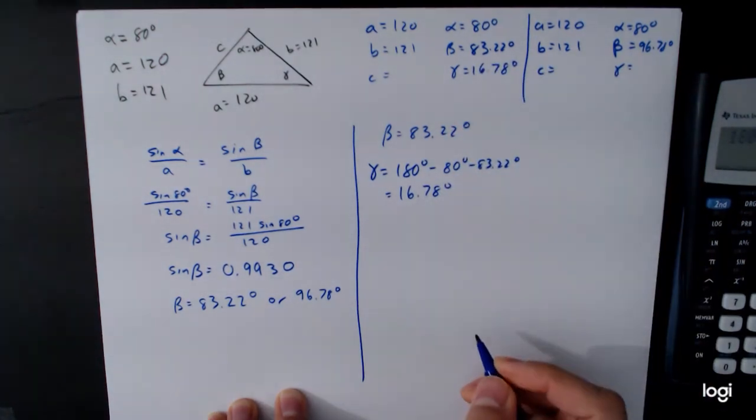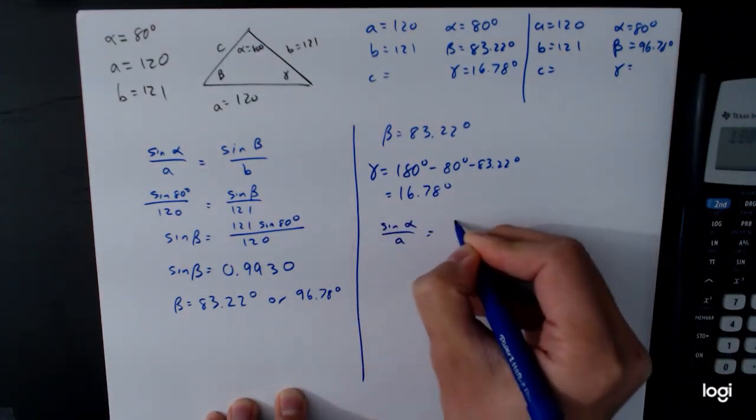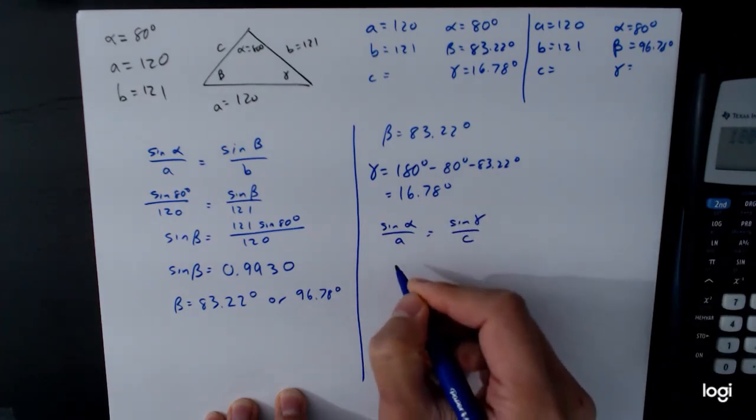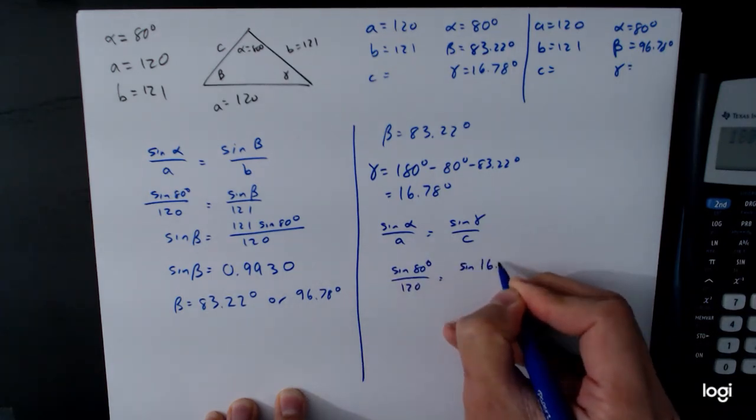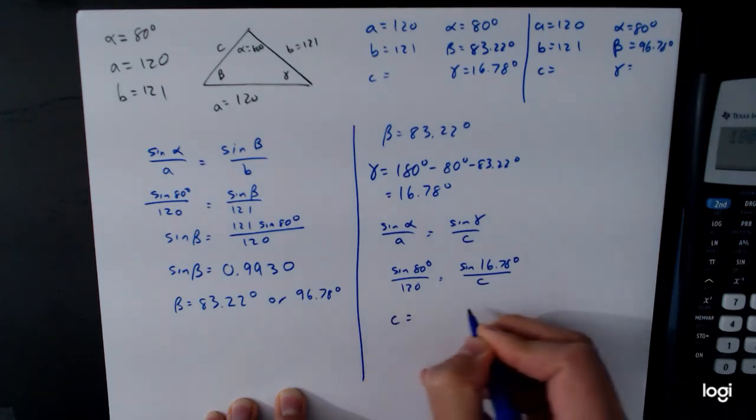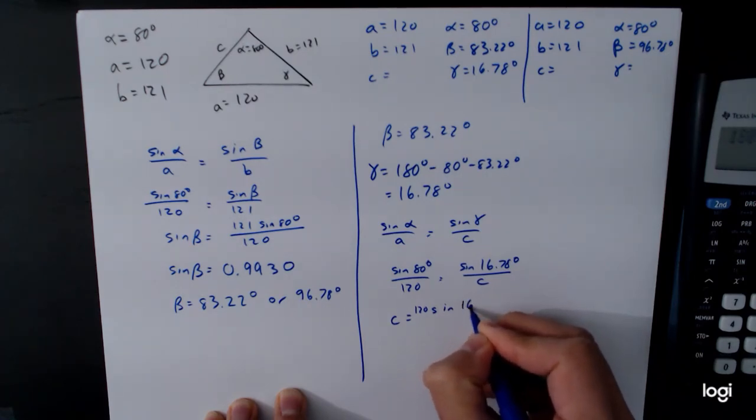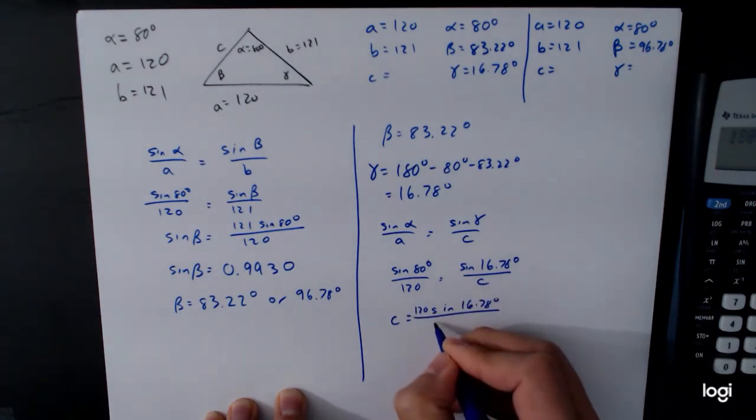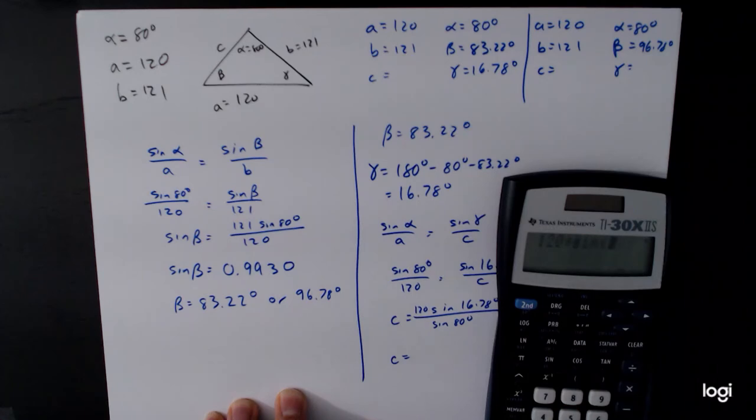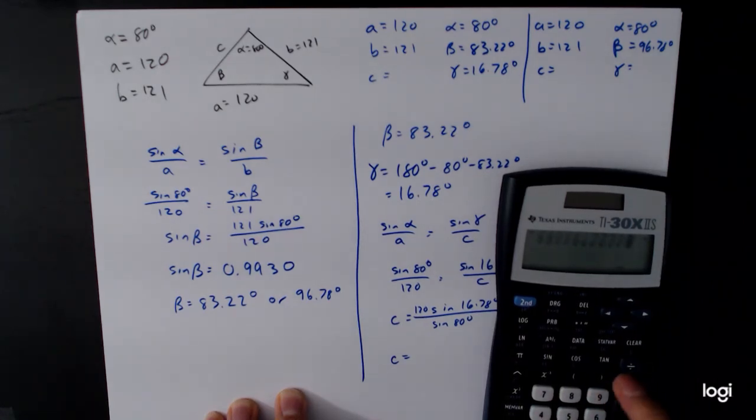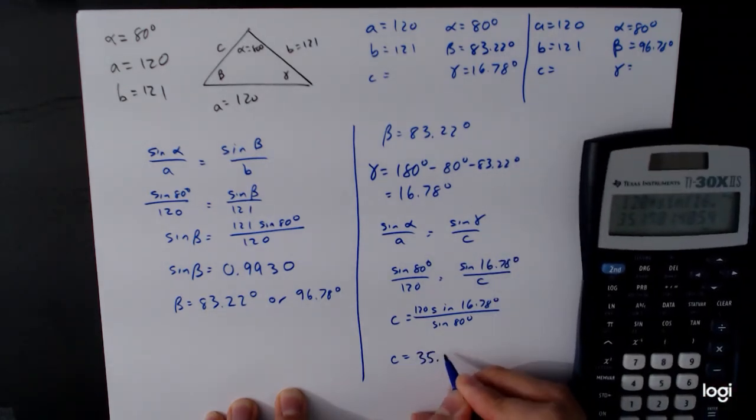And that allows us to solve for C. So sine of alpha over A is equal to sine of gamma over C. 120, sine of 80 degrees over 120 is equal to sine of 16.78 degrees over C. C is equal to 120 sine of 16.78 degrees over sine of 80 degrees. 120 times sine of 16.78 divided by sine of 80, 35.18.